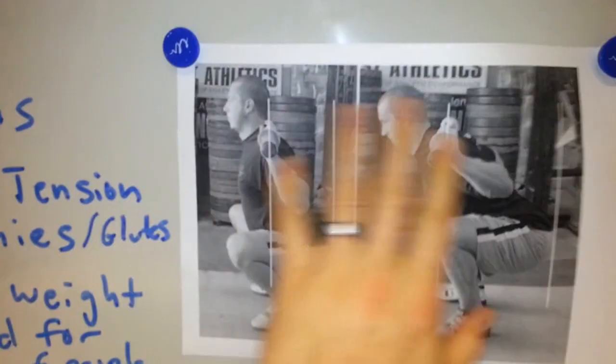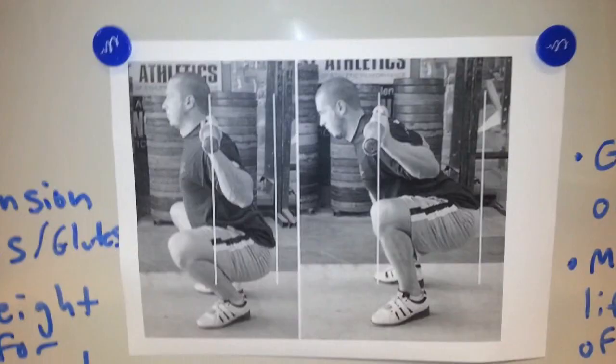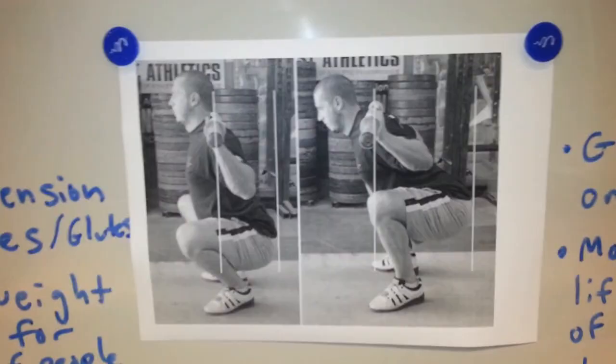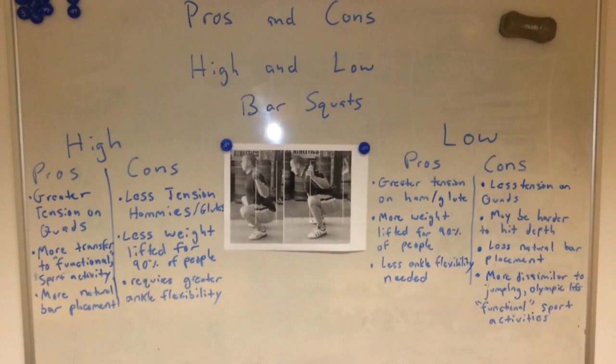Same with the front squat — the front squat bar would be up here, and the high bar would be there, so it's more similar than having the bar down on the rear delts. These are just different applications. For a bodybuilder, there's probably a good argument for either one depending on your strengths and weaknesses and what the rest of your programming looks like. In a broad sense, both high bar and low bar squats have pros and cons worth discussing.